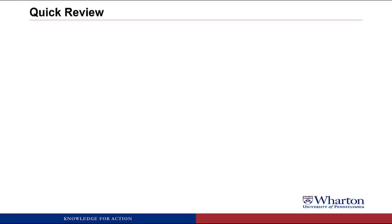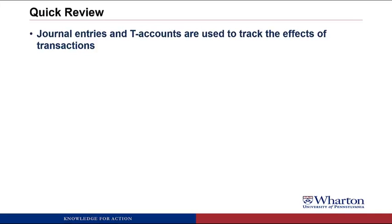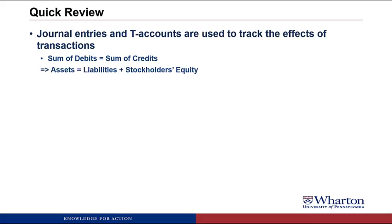Let's start off with a quick review. We've seen in the last couple videos how journal entries and T-accounts can be used to track and record the effects of transactions. The key is to make sure that our debits equal our credits when we record these journal entries. If we do so, then we know that the balance sheet equation will hold when we add everything up. So the debits and credits substitute for the balance sheet equation.